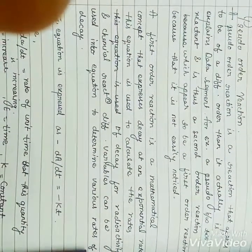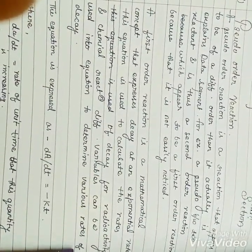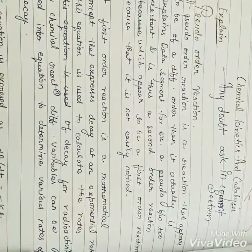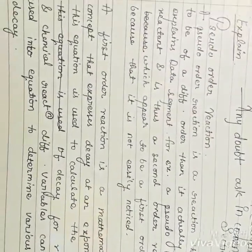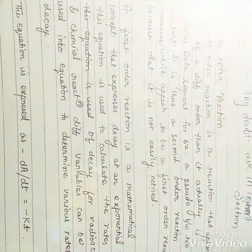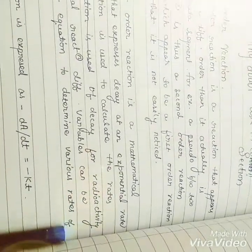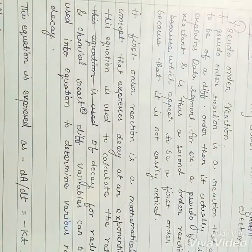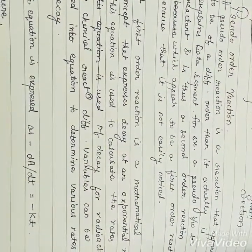This happens because one reactant is very low in quantity, so it is not easy to notice. This is why it is called a pseudo order reaction — because it shows us something else but is actually something else. It involves two reactants, so it should be a second order reaction, but because one reactant is present in such a low quantity that we cannot notice it, it is treated as a first order reaction.